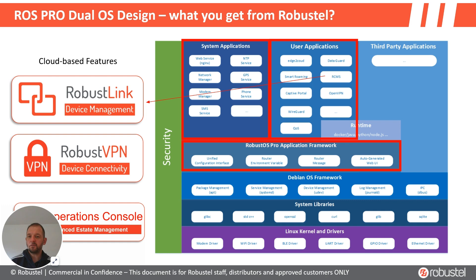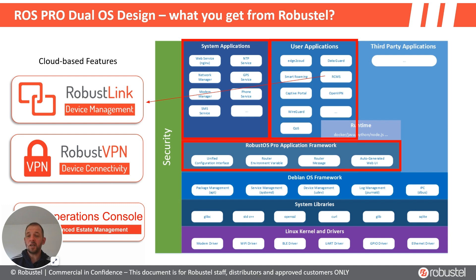RobustVPN is Robustel's own OpenVPN implementation, available to any device that connects to Robustel's platform. The really elegant thing is not only can you make a remote connection to anything running in RobustOS, but to any third-party applications as well. You can make a remote connection and get root access as a pseudo user, securely over the air. For those developing applications, this is really where the value pitch is designed, because there's so much software you get out of the box compared with more standard offerings.